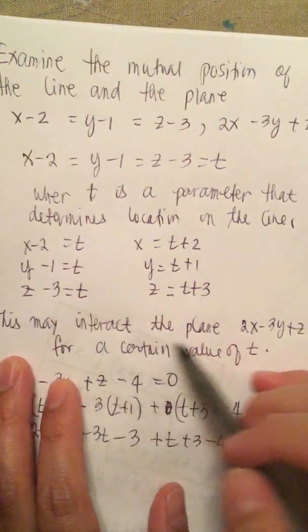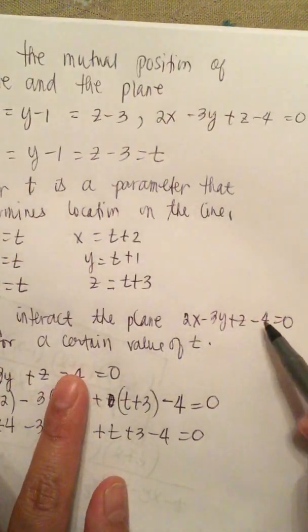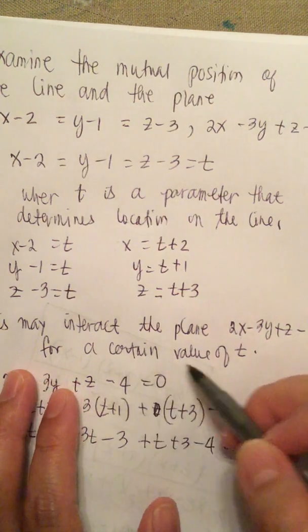Now this may interact with the plane 2x minus 3y plus z minus 4 equals 0 for a certain value of t.